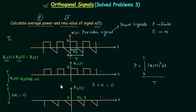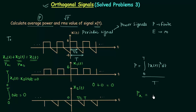Since x1(t) and x2(t) are orthogonal signals, the average power of the composite signal Px is equal to the sum of the average powers of the individual orthogonal signals. So Px equals Px1 plus Px2, and now we will calculate Px1 and Px2 individually.